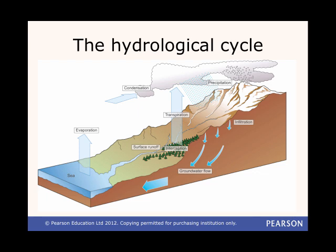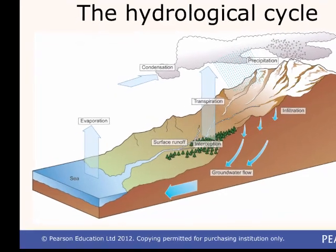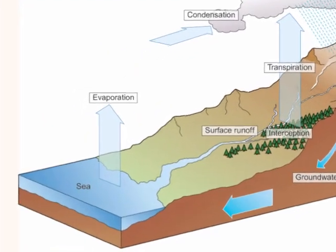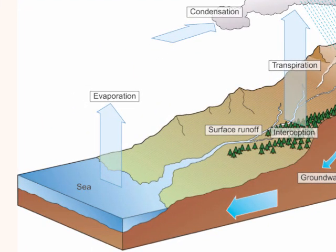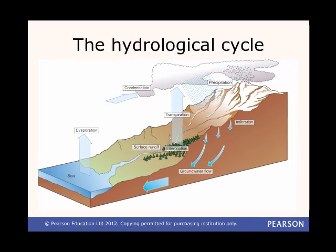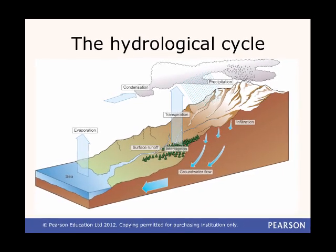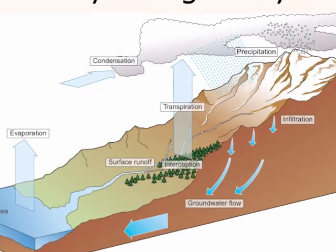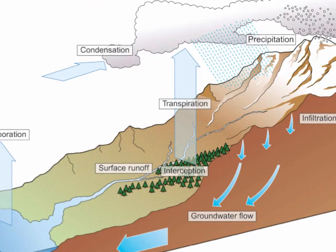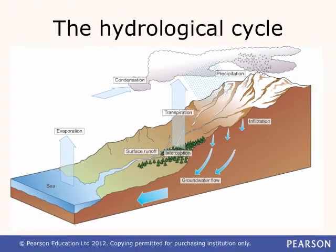The hydrological cycle is a cycle. It doesn't have a start or an end, but we can start looking at it with evaporation, which is when the sun's heat changes liquid water into water vapour. This happens at the surface of the sea and from water surfaces on land. Evaporation is the main way that water vapour enters the atmosphere, but transpiration is another way too. This is when plants breathe water vapour into the air.